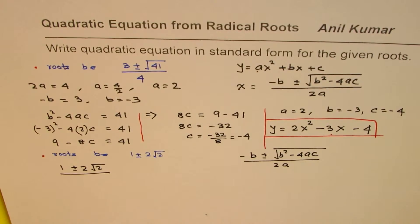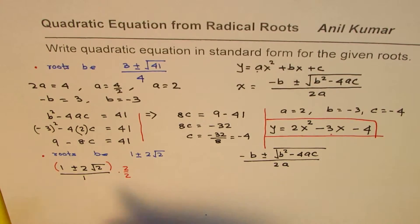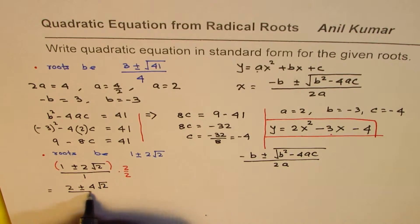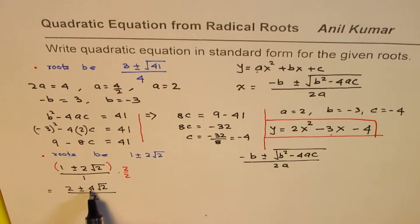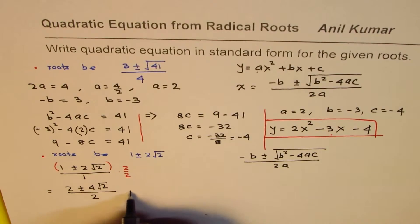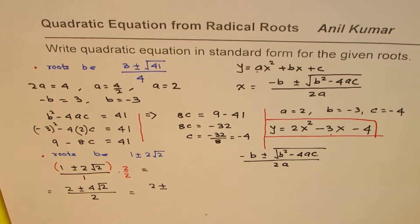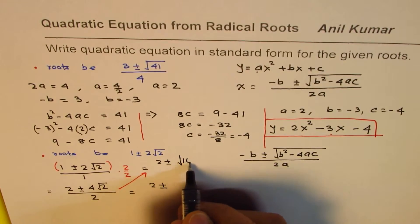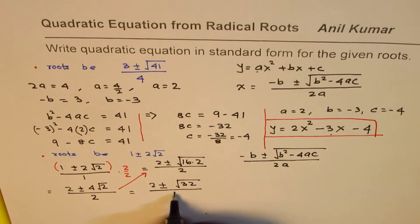What I will do is rewrite the root 1 ± 2√2 as being over 1, then multiply everything by 2. That gives (2 ± 4√2) / 2. Now to get everything inside the square root, we can take 4 inside the radical — 4 squared is 16 — so we get (2 ± √(16 × 2)) / 2, which is (2 ± √32) / 2.